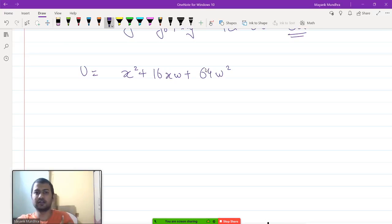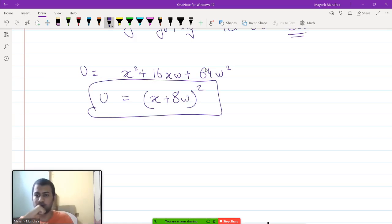So, you can write this function as (x + 8w)², right? So, your utility function becomes (x + 8w)².